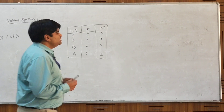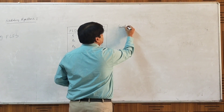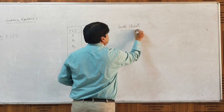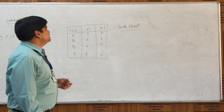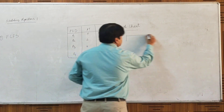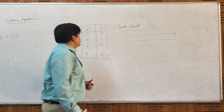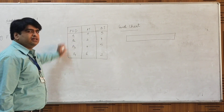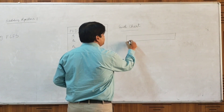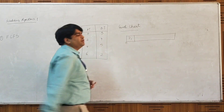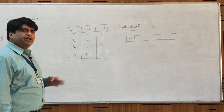To solve this, we first make a Gantt chart — named after the scientist who developed this technique. At time t=0, only one process wants the CPU and that process is P1. Because there is no competition, we allocate the CPU to process P1. So at time t=0, P1 is allocated to the CPU.